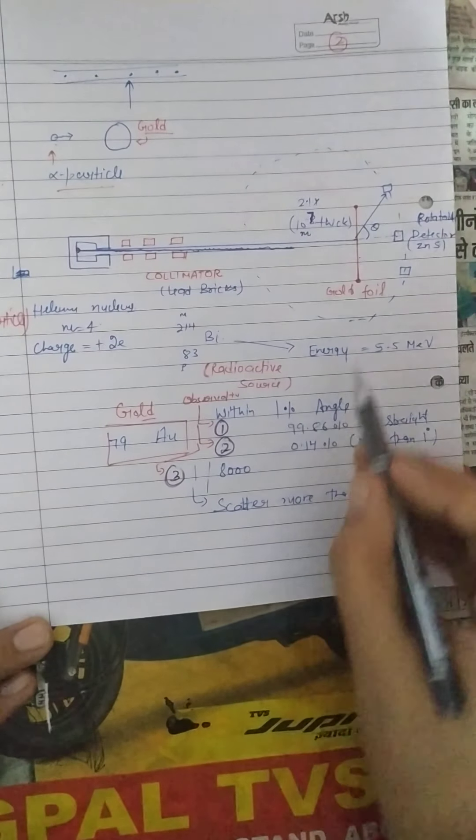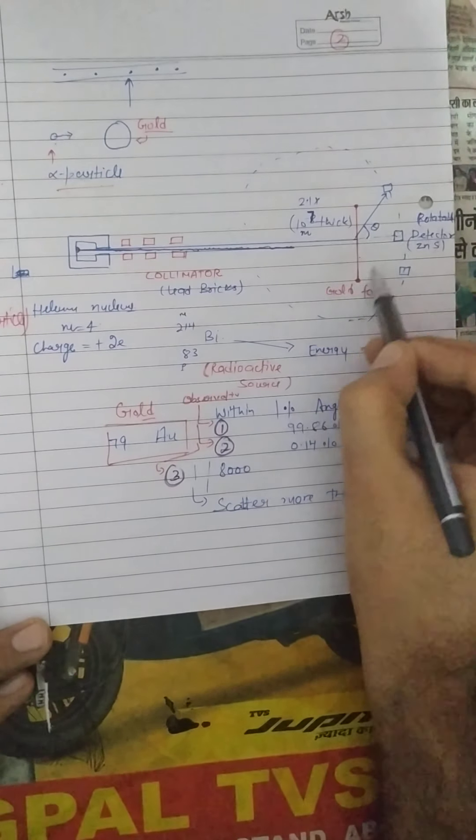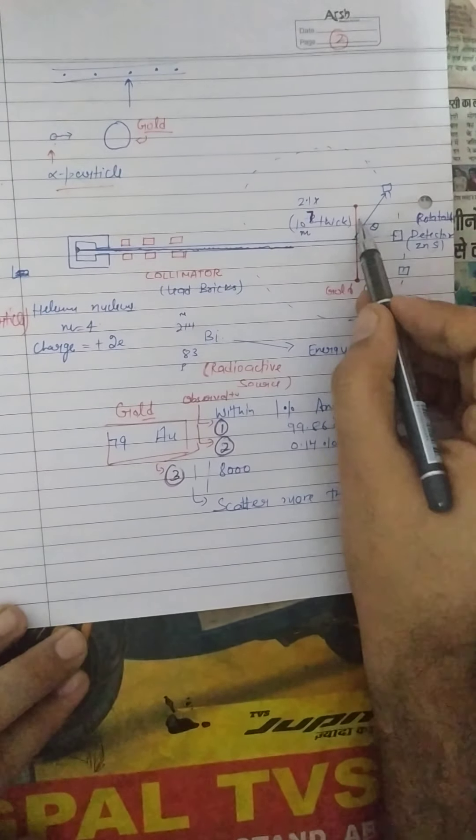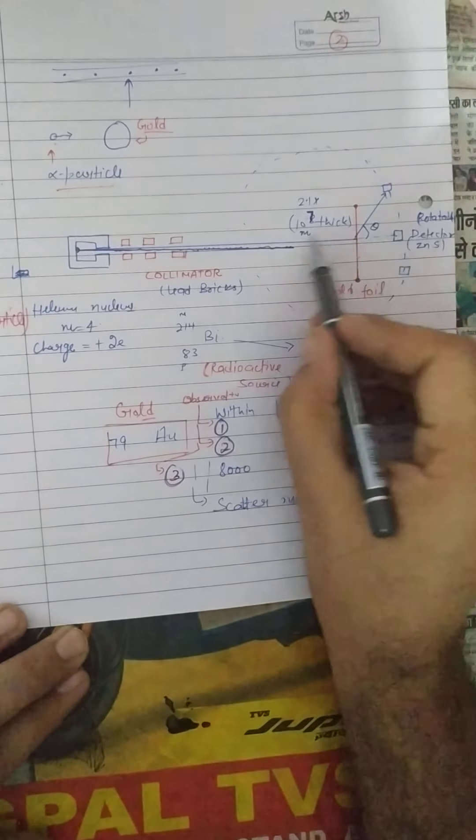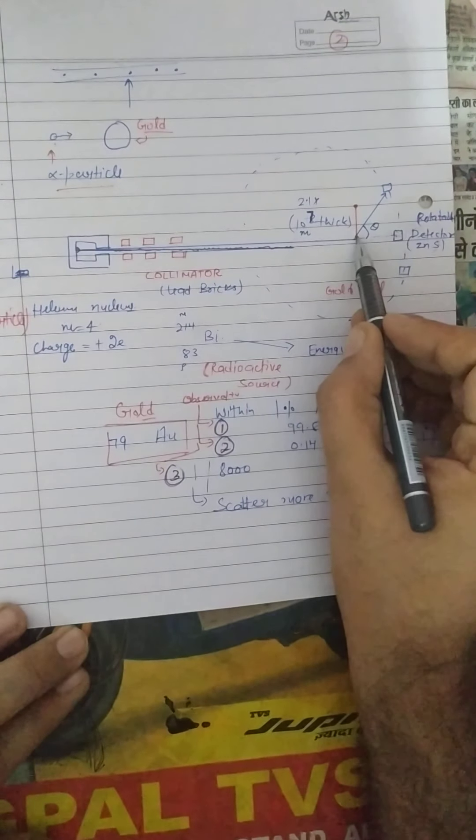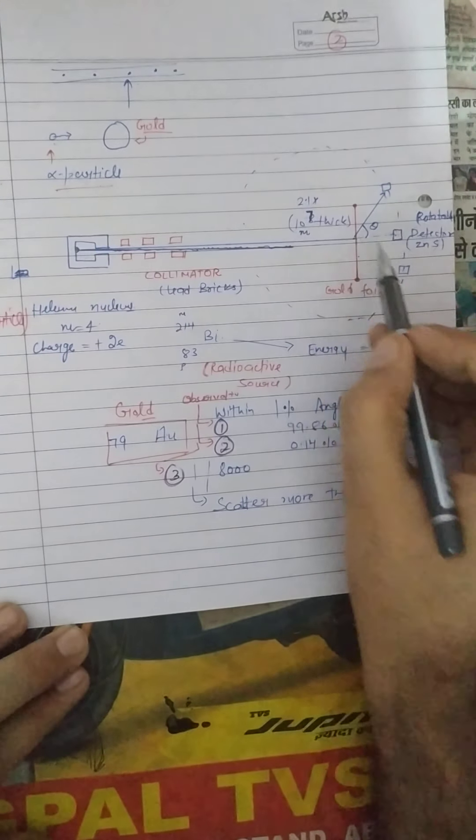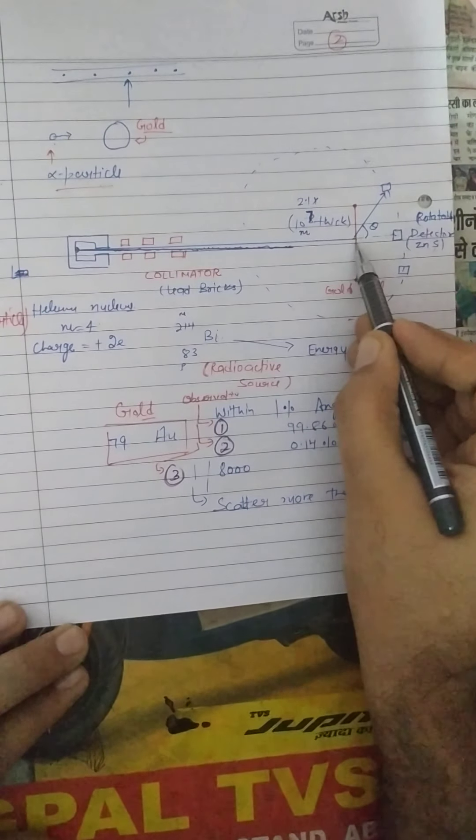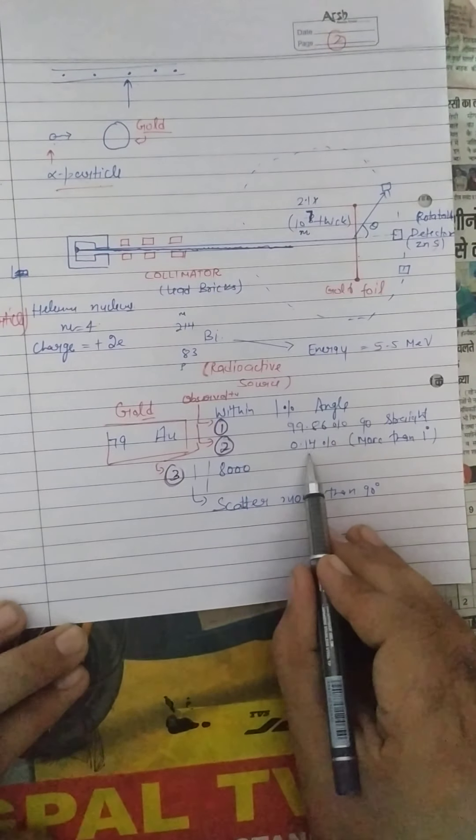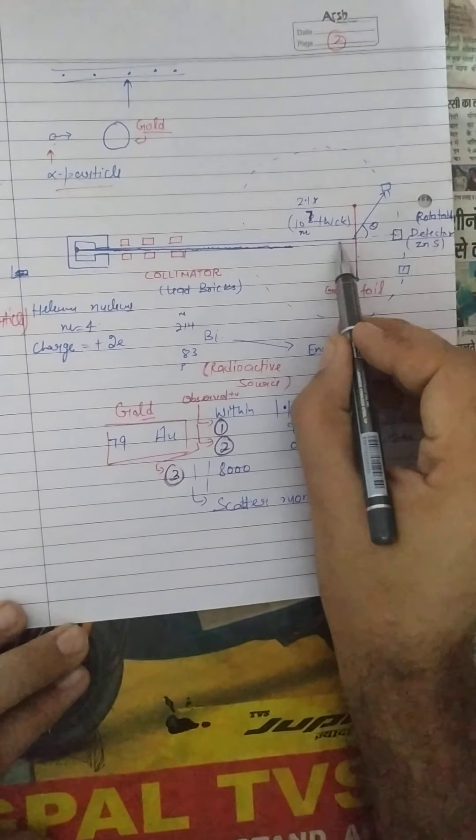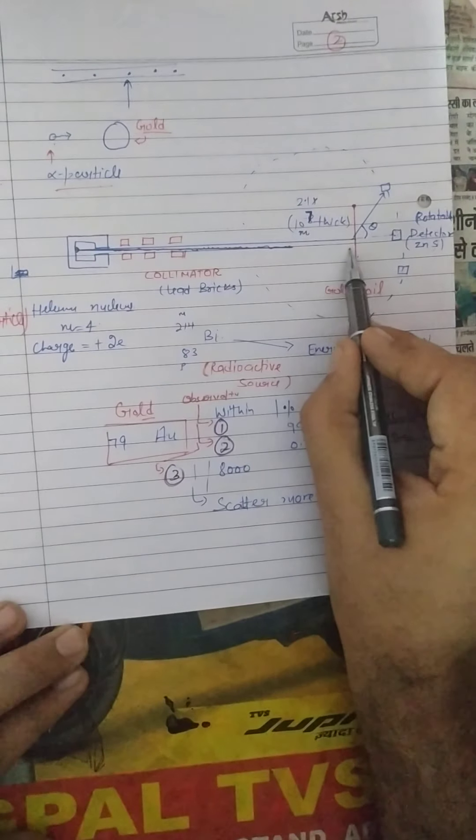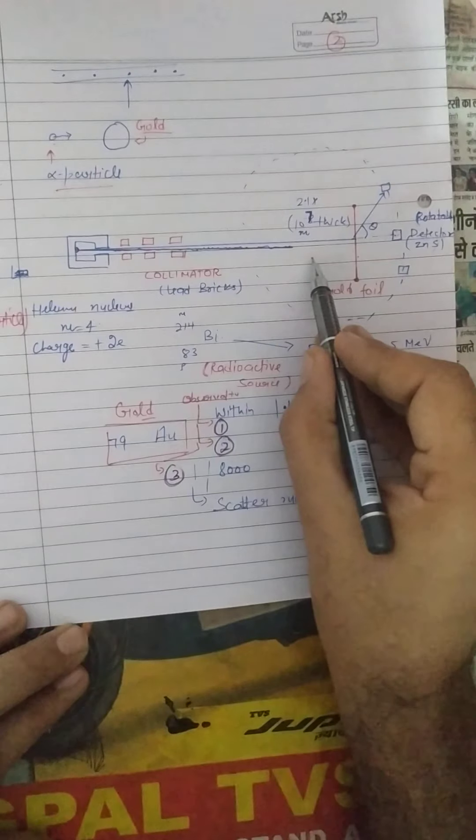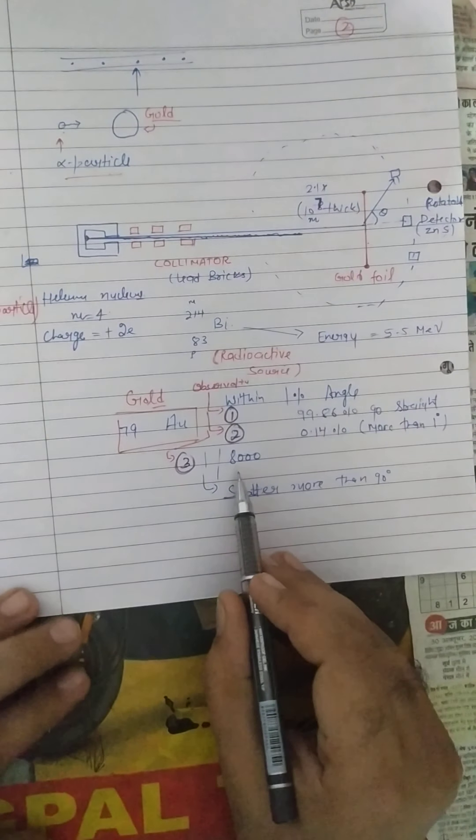So they have suggested that most of the particles that are going straight means the space is like empty, that means the gold film is empty so the alpha particles will pass through. But there is some mass that is lying at the center, due to that this particular percentage will turn through an angle. There is some mass with which we can see the scattering, and they have taken a particular reading.